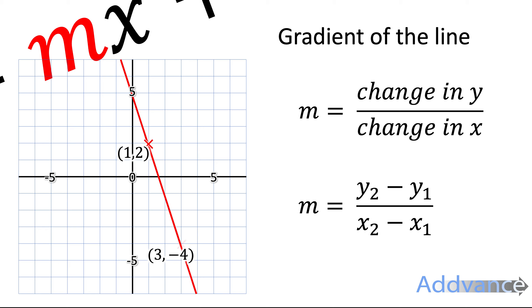So let's look at this line here, and this line goes through the coordinates 1, 2 and 3, minus 4. Let's work out the gradient using the top equation first, change in y over change in x. The change in x is how far it goes across, the change in y is how far it goes down, or up or down.